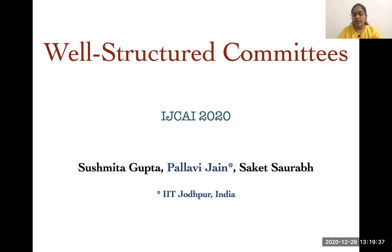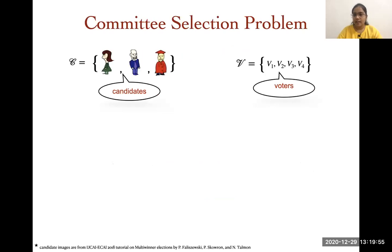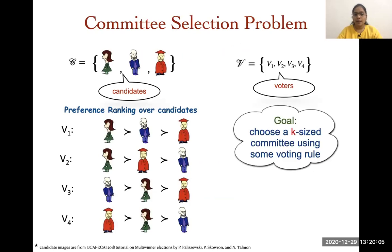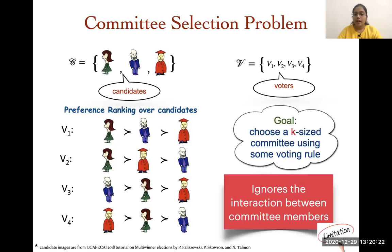Committee selection problem is a well-studied problem in computational social choice theory. In this work, we study a generalization of this problem where we also consider the possible interactions or dependencies between the committee members. In the committee selection problem, we have a set of candidates and a set of voters. One of the election models is that voters rank candidates on the basis of their preferences. The goal is to choose a subset of K candidates using some voting rules, and we call this subset of candidates a committee. This is a classical committee selection model.